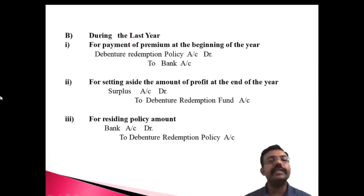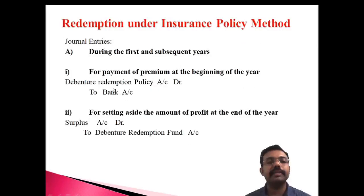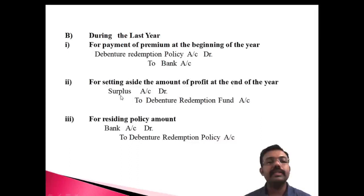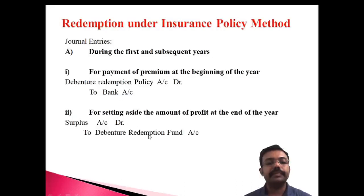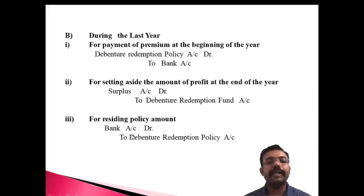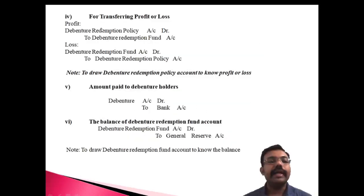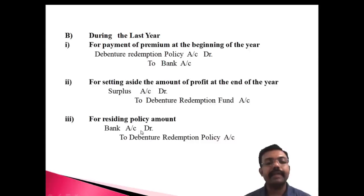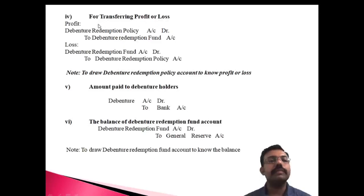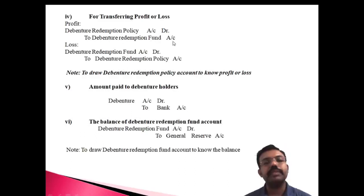For the last year, the first entry is payment of premium at the beginning of the year: Debenture Redemption Policy Account debit, Bank Account credit — same entry as before. Second, setting aside the profit at the end of the year: Surplus Account debit, Debenture Redemption Fund Account credit. Third, for receiving the policy amount: Bank Account debit, Debenture Redemption Policy Account credit. Fourth, for transferring the profit or loss — if profit: Debenture Redemption Policy Account debit, Debenture Redemption Fund credit; if loss: Debenture Redemption Fund Account debit, Debenture Redemption Policy Account credit.